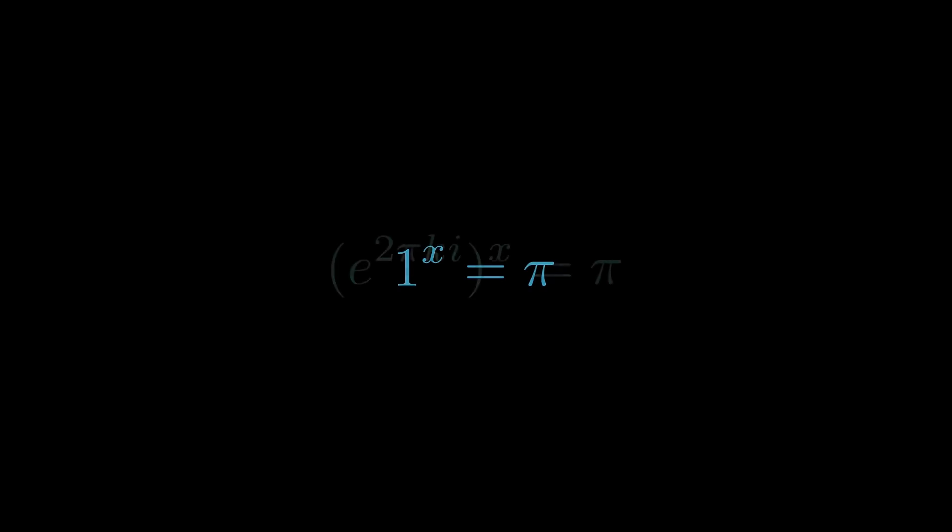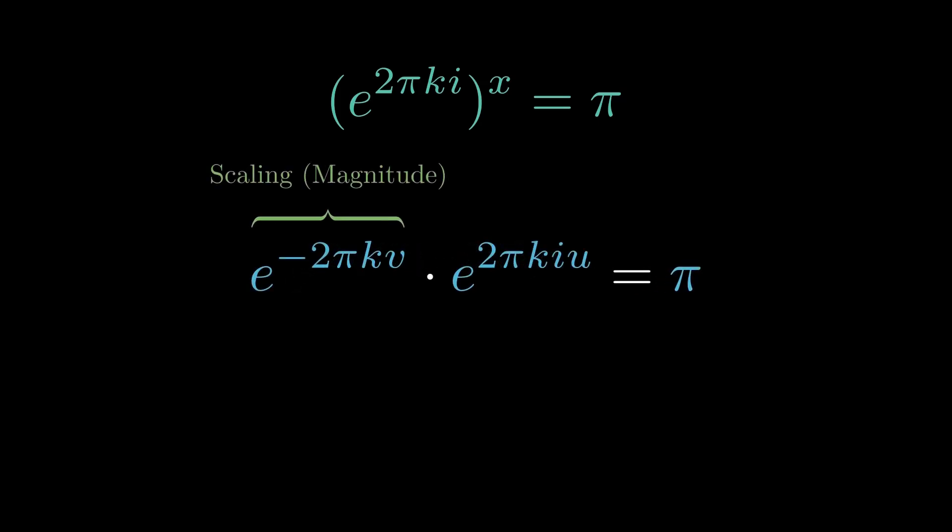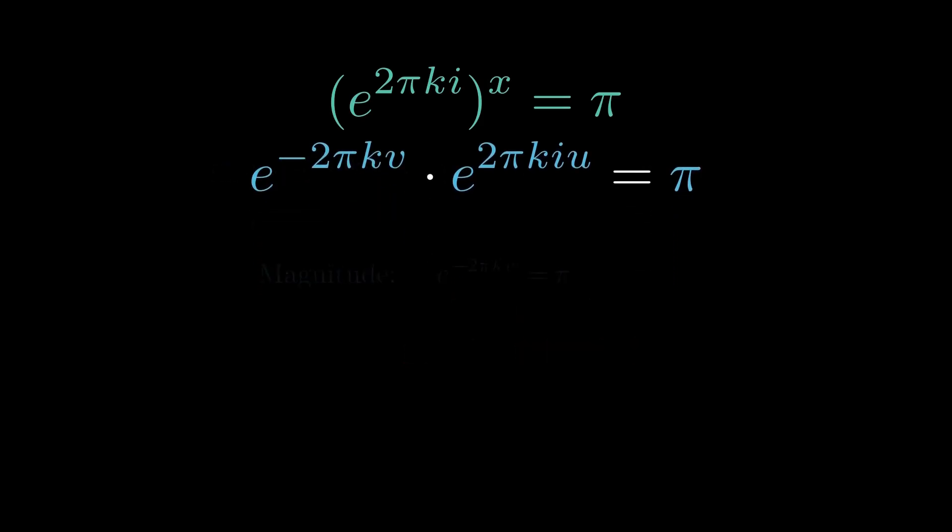Here's the mechanism. Write 1 as e to the 2πki, then 1 to the x becomes e to the 2πki times x. Now let x equal u plus iv. When you expand, it splits into two effects. e to the negative 2πkv sets the magnitude, and e to the 2πkiu sets the direction. To hit π, the magnitude must match π, and the direction must land exactly back at 1.